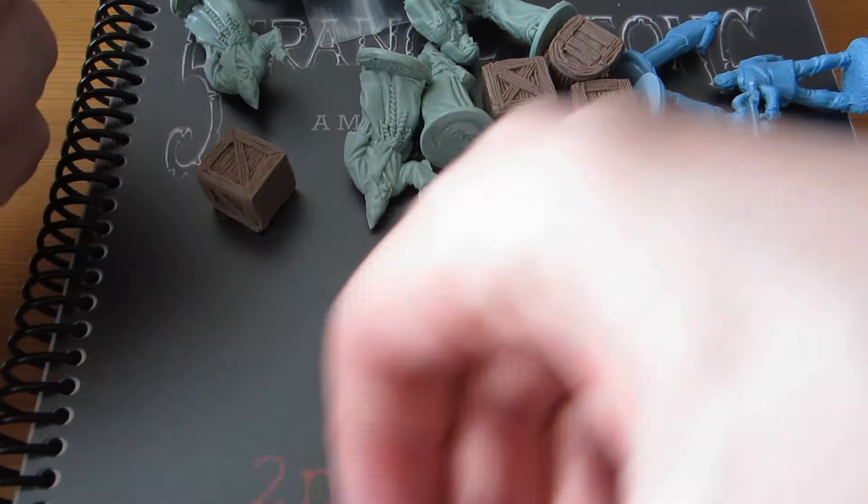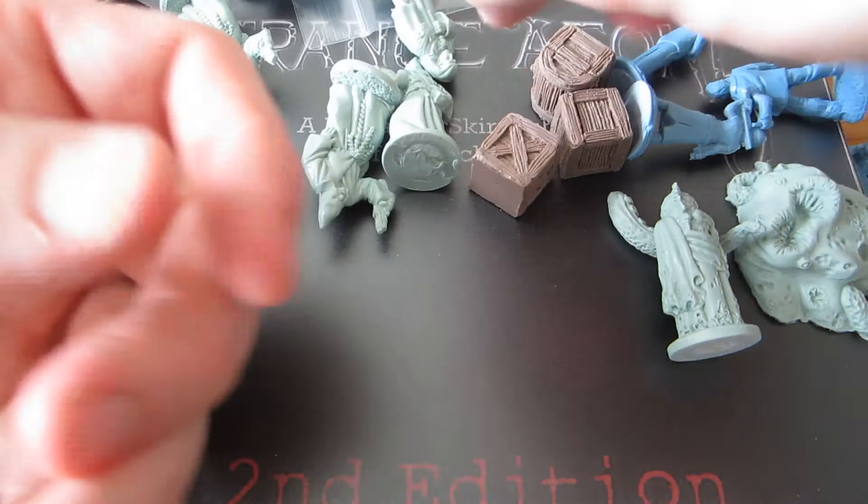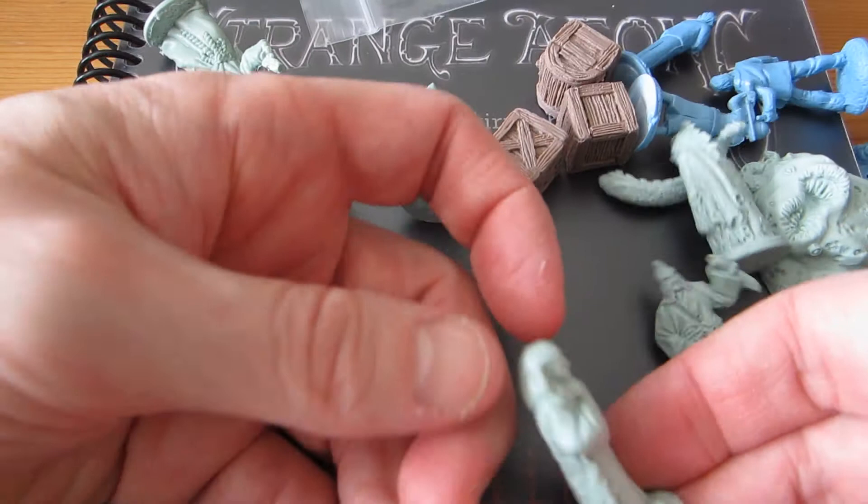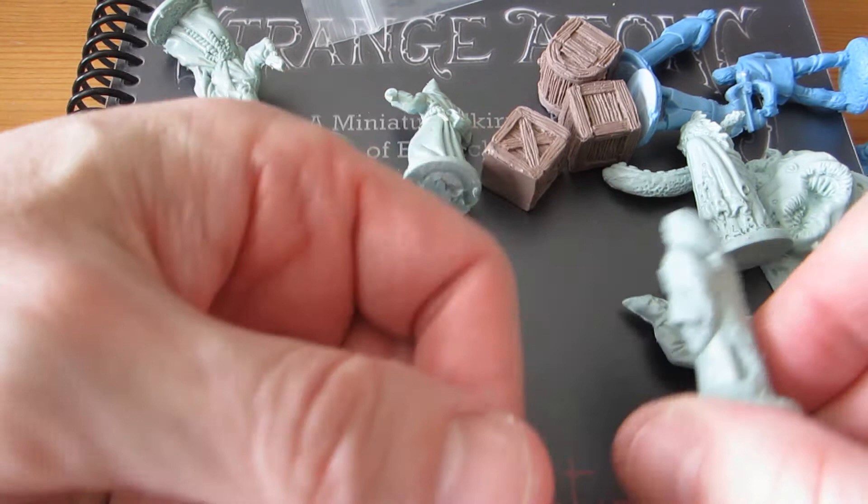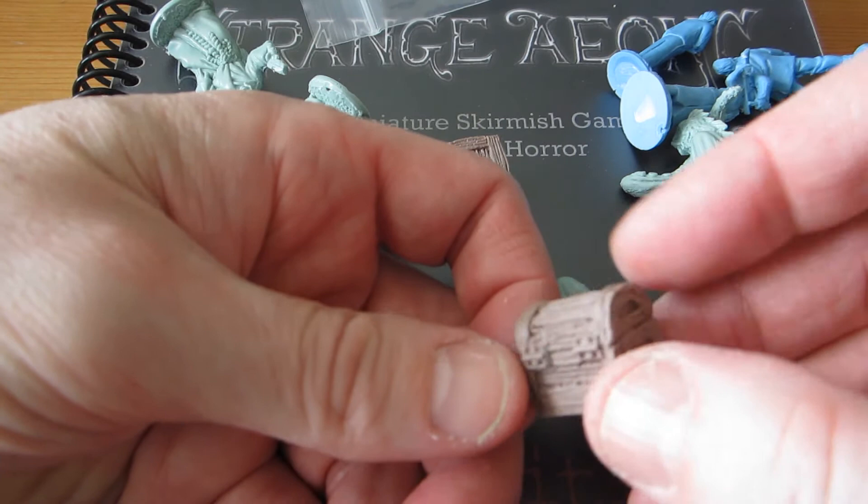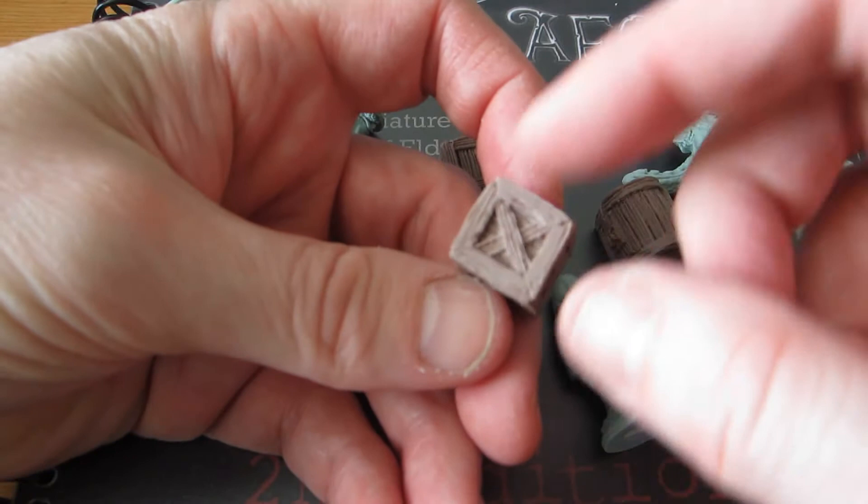And here we have a fish man. This one is better cast, actually. It's cleaner. How are the cultists doing? Yes, slight mold line, but not as bad as on the good guys. Priest with Egyptian headdress. Oh no, he has a mold line. Yeah, they all have mold lines down the side, more or less. It's just a question of degree. These chests are better. And the crates, because these are so heavily textured, you probably wouldn't notice if there was a mold line anyway.